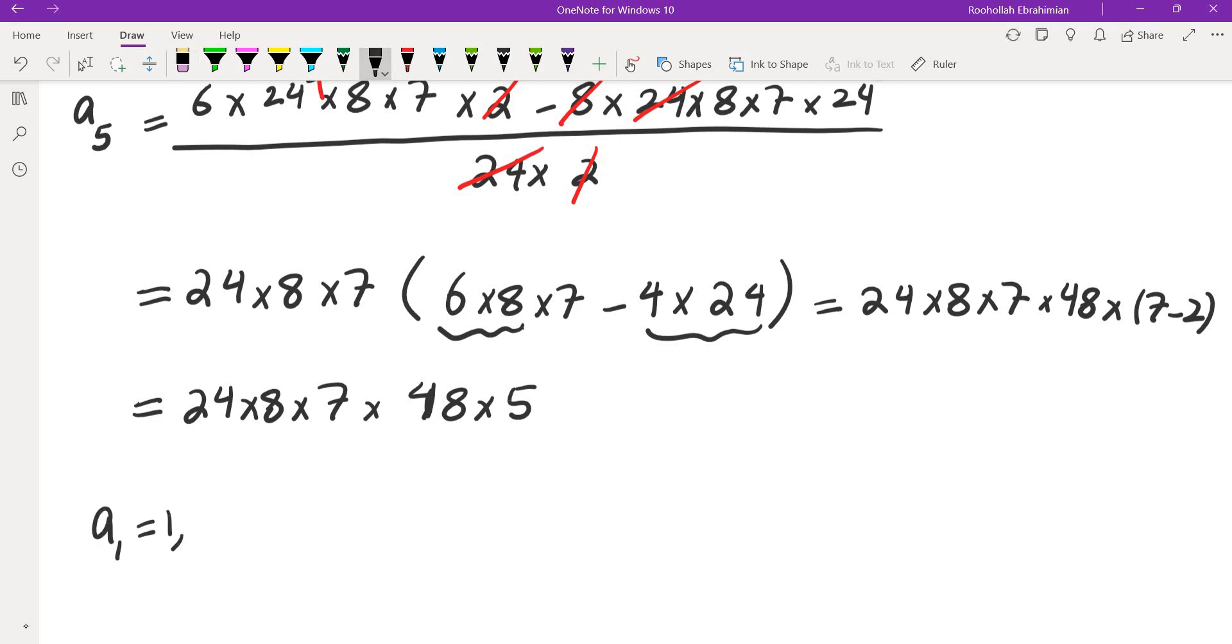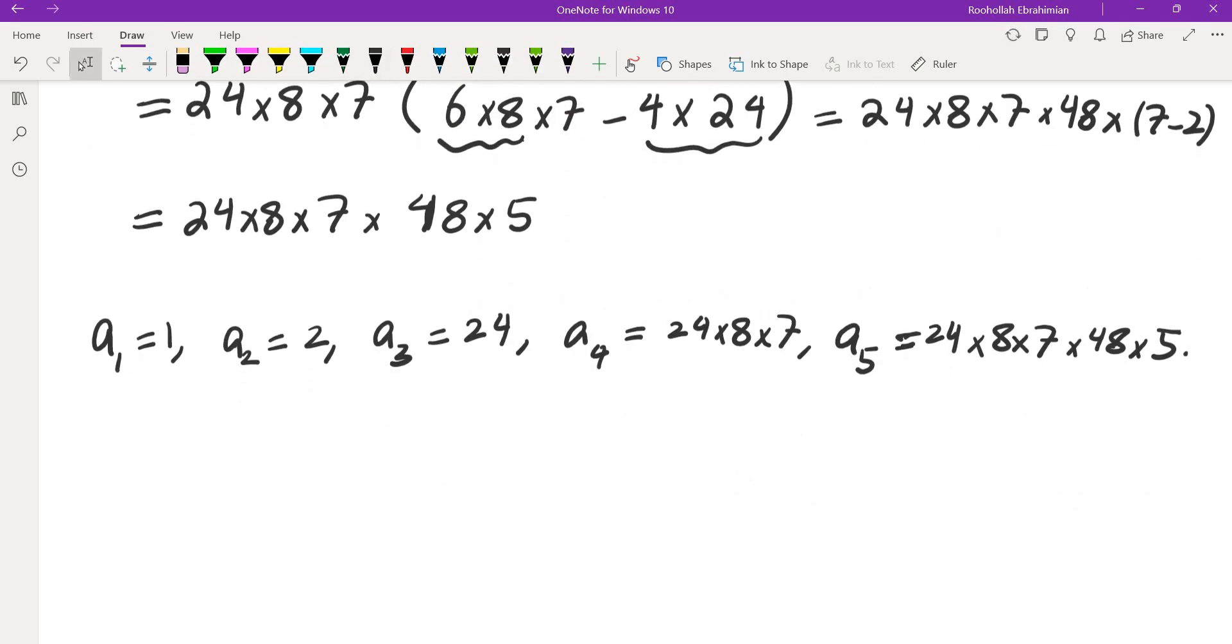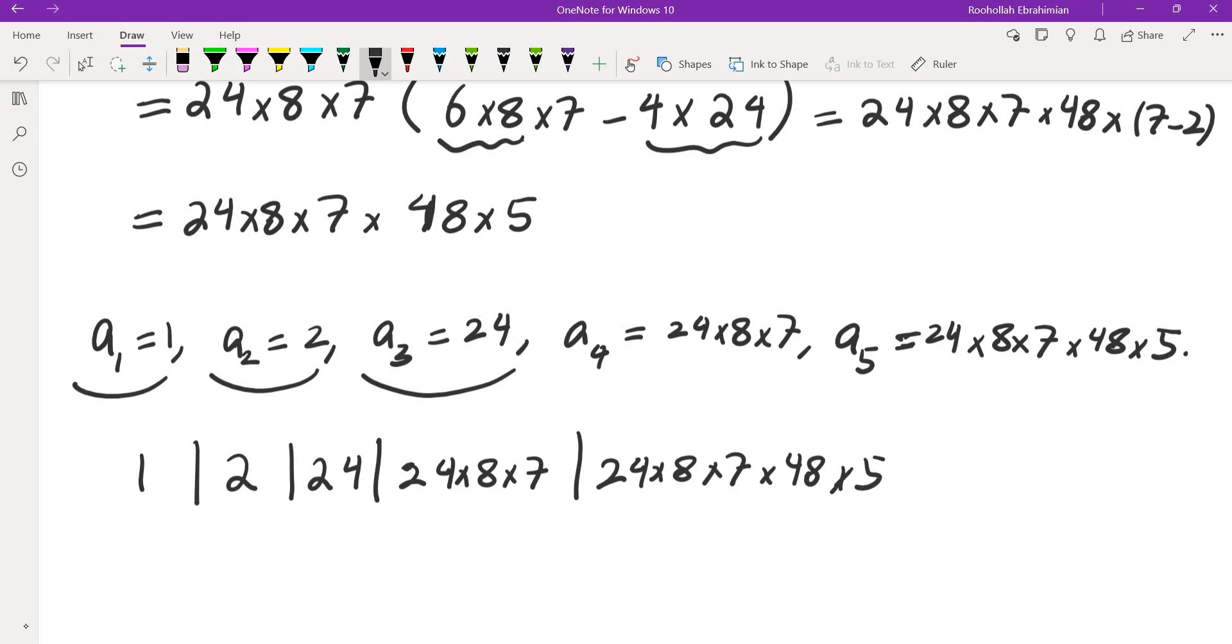Let's summarize what we got. We have a1 equals 1, a2 equals 2, a3 equals 24, a4 equals 24 times 8 times 7, and a5 equals 24 times 8 times 7 times 48 times 5. Unfortunately, this gets much more complicated as you proceed with the future terms. So let's see if we can see any pattern at this point. I don't really see a pattern in evaluation of this sequence, but I do notice a couple of things. First, all of these are integers as we were promised. And second, I noticed that every term divides the next term. So 1 divides 2, divides 24, divides 24 times 8 times 7, and that divides 24 times 8 times 7 times 48 times 5. So that's interesting. That's one thing I noticed.